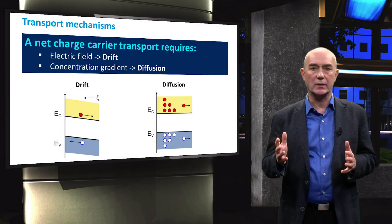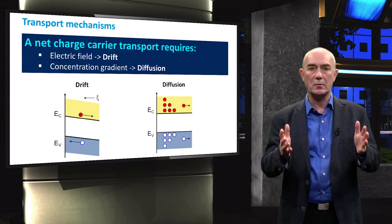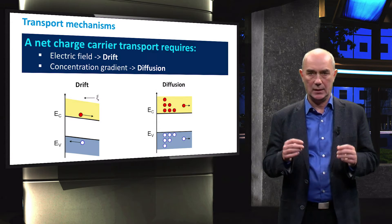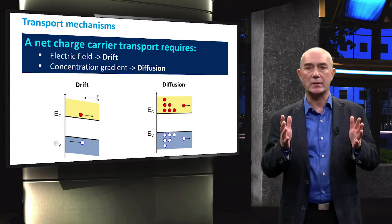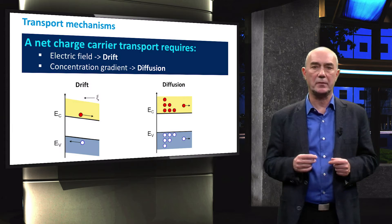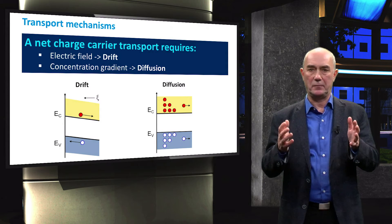Since electric current only arises from a net movement of charges, during the first week we will discuss the mechanisms of charge transport. In a semiconductor, we distinguish transport based on drift and diffusion of carriers. Drift occurs in response to an electric field.